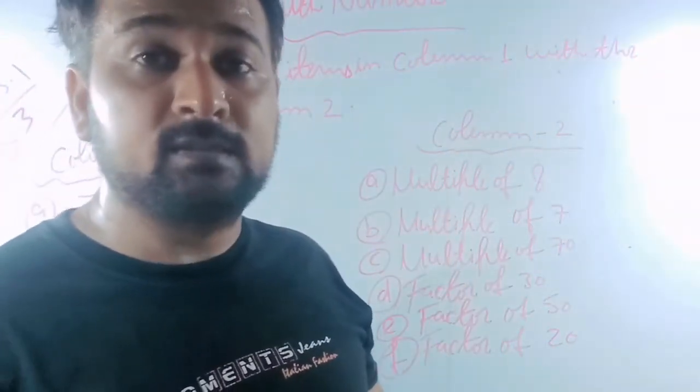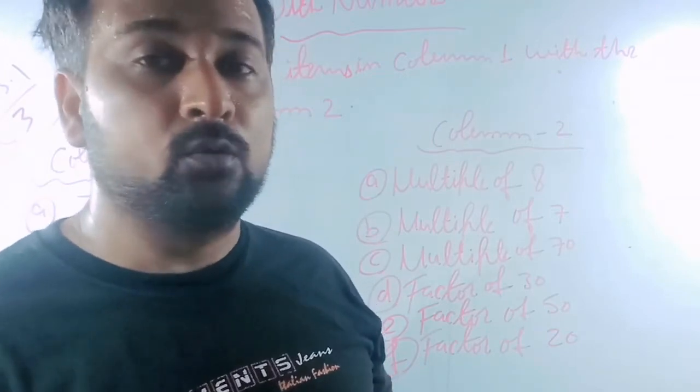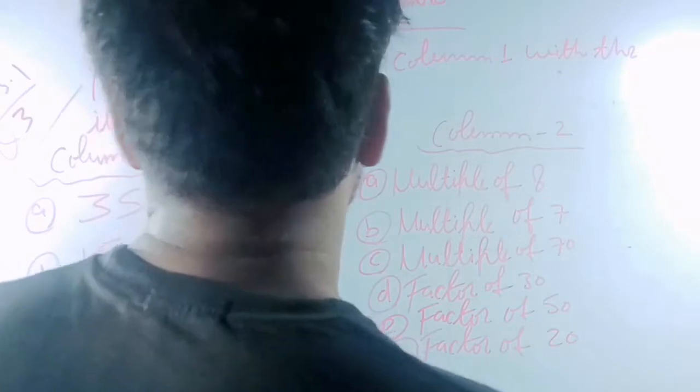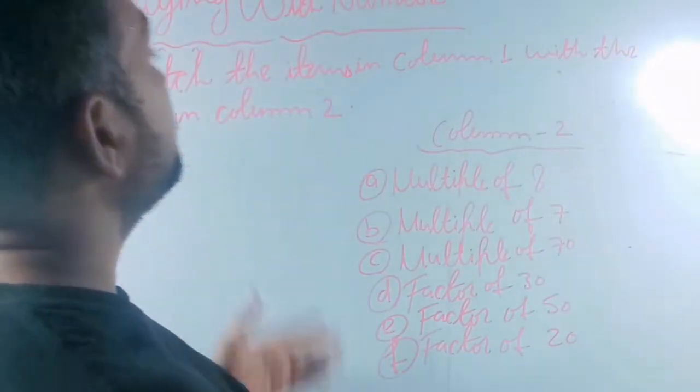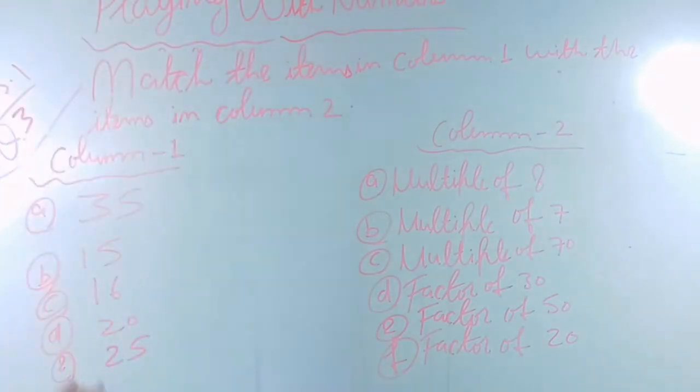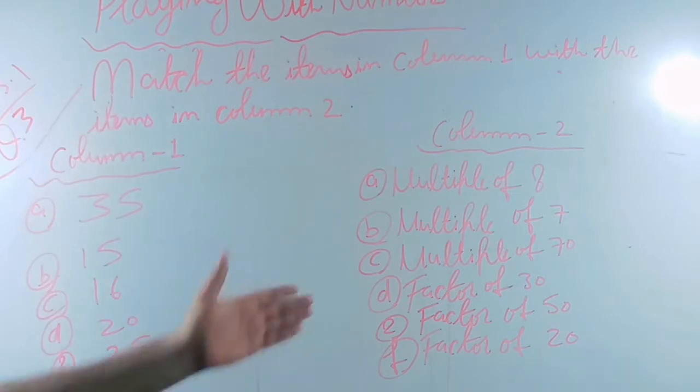Now we'll solve question number 3 of exercise 3.1. The question is: match the items in column 1 with the items in column 2. Here you are seeing numbers 35, 15, 16, 20, 25, and some things given like multiple and factors.